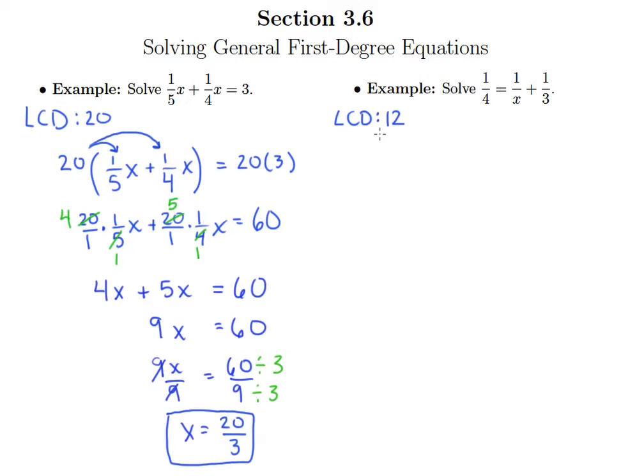So let's think about what the purpose this least common denominator is going to serve. It's going to be to eliminate all the denominators. So in order for this x to cancel out this least common denominator needs to also have an x factor in it. So our least common denominator here is 12x.